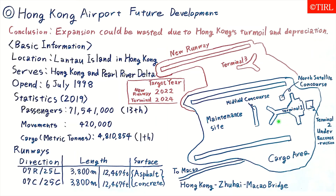This airport has two terminals. Terminal 1 is here, and Terminal 2 is here. Terminal 2 is currently under reconstruction. The Midfield Concourse is located here, and the North Satellite Concourse is located here. The airport also has a cargo area and maintenance site.